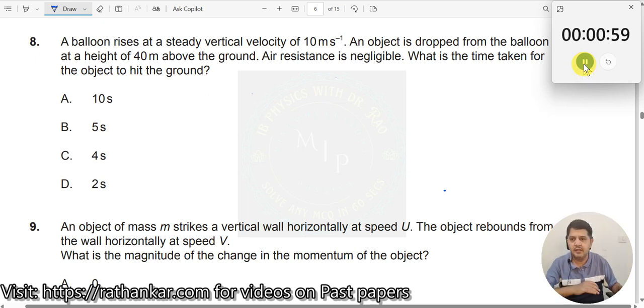Question number 8. A balloon rises at a steady vertical velocity of 10 meter per second. An object is dropped from the balloon at a height of 40 meter above the ground. This is the ground, this is the balloon. From here an object is being dropped. The height of the balloon from the ground is 40 meter.